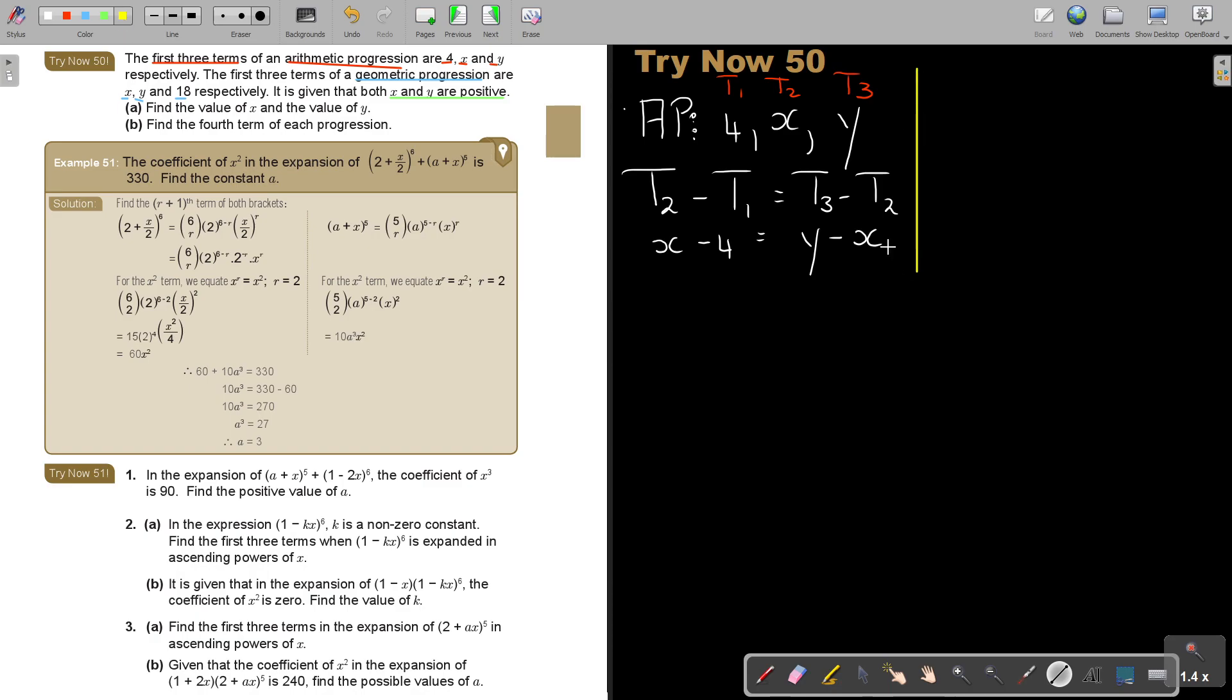I'm continuing. So geometric now, I know it's a GP. And the first three terms will be x, y, and 18. So don't forget, this is term one, term two, term three.